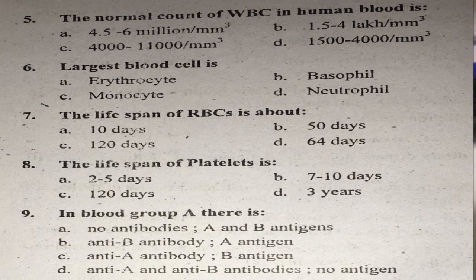Question number nine: In blood group A, what antigen and antibody are present? In blood group A, antigen A is present, and antibody B (anti-B) is present. The right answer is B.